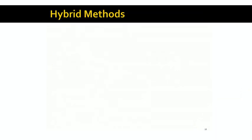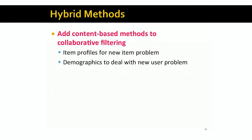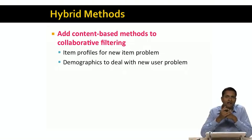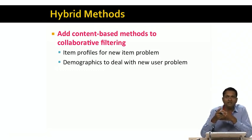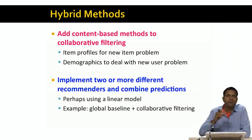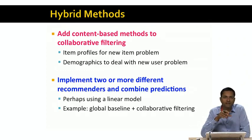Now that we've seen some of the difficulties with collaborative filtering, we can design hybrid methods to overcome those difficulties. For example, we can add content-based methods to collaborative filtering — we can add item profiles to deal with the new item problem and make recommendations of new items to users. Or we might take new users and use demographic information about new users to build synthetic profiles for them, to deal with the new user problem. Another approach is to implement two or more different recommender systems and combine their predictions, perhaps using a linear model.